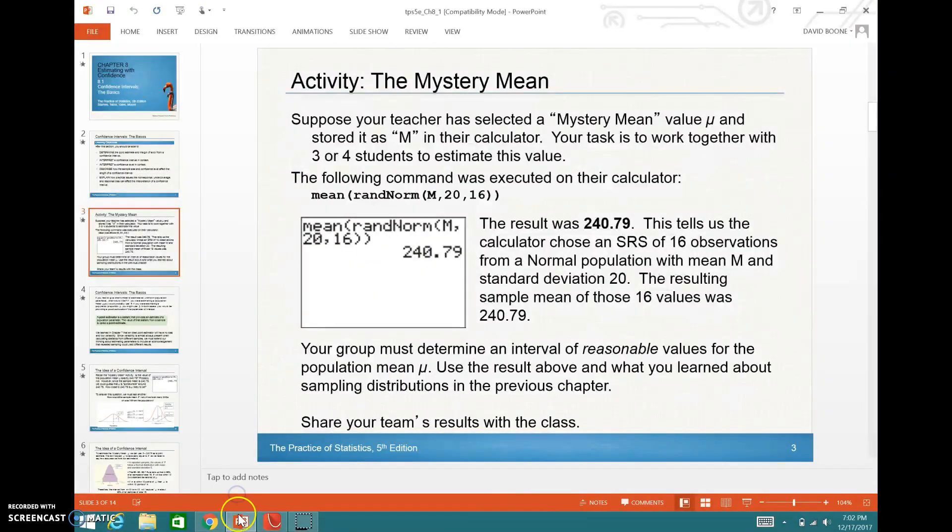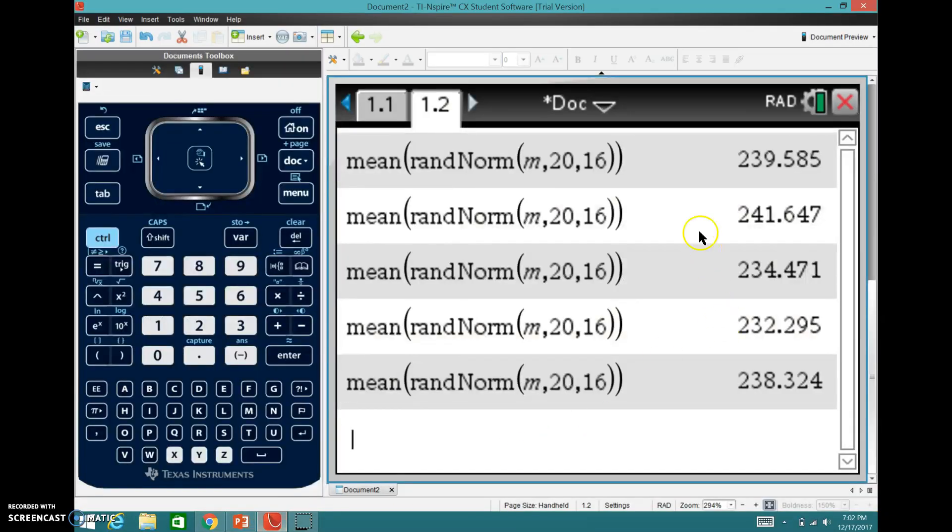We'll do a little comparison here as a class. So I'm going to go back to that calculator. Here's the mean of a sample of 16 from this population. Here's a mean from another 16. So another group did a group of 16 from this population and got the mean of that.